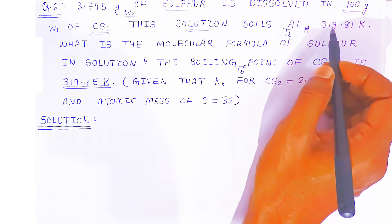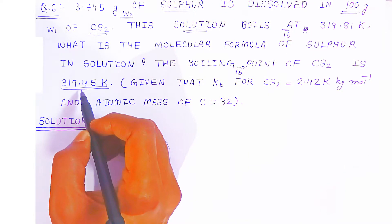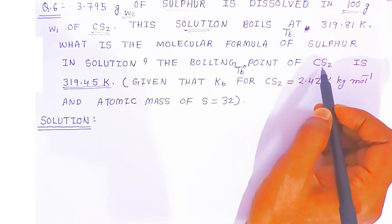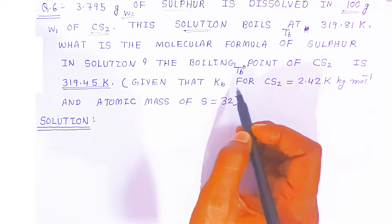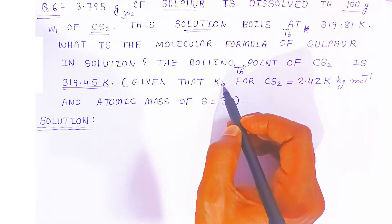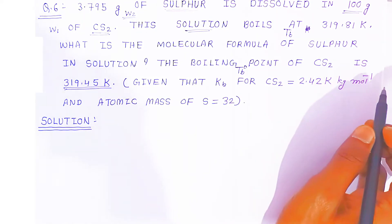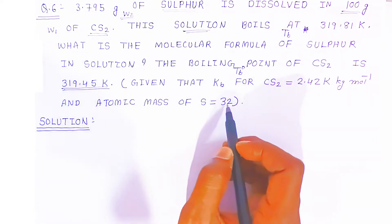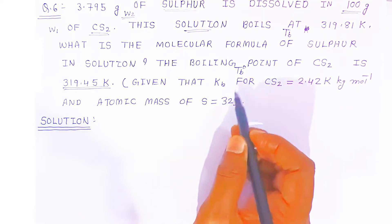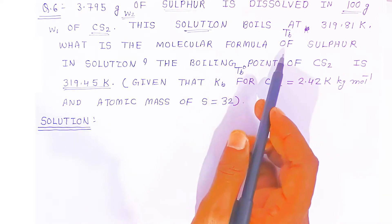So 319.81 K is the boiling point of the solution and 319.45 K is the boiling point of the solvent, carbon disulfide. The boiling point constant Kb of carbon disulfide is given as 2.42 Kelvin kilogram per mole, and the atomic mass of sulfur is 32. From these data, we are going to find the molecular formula of sulfur.